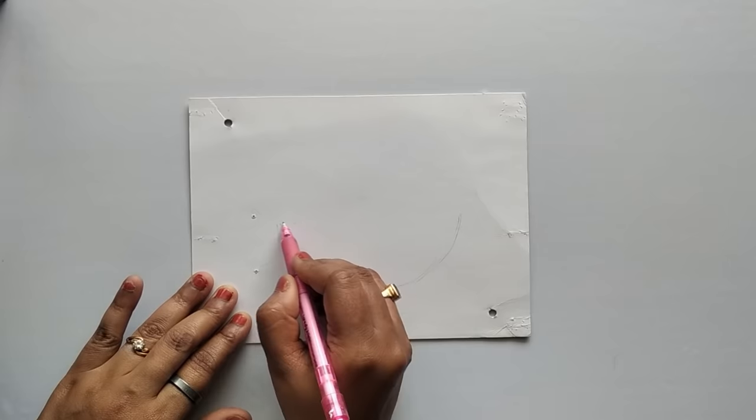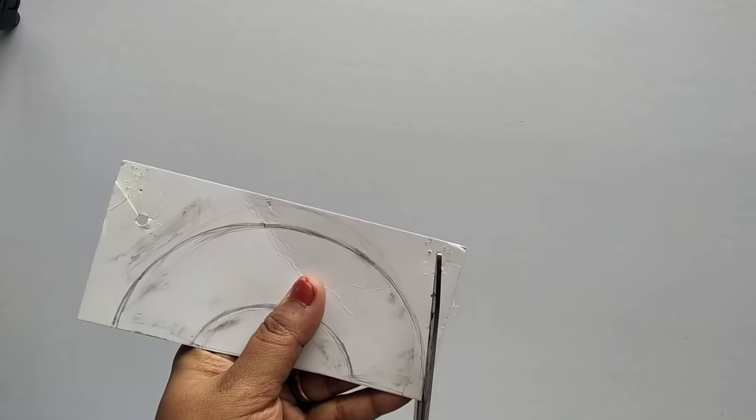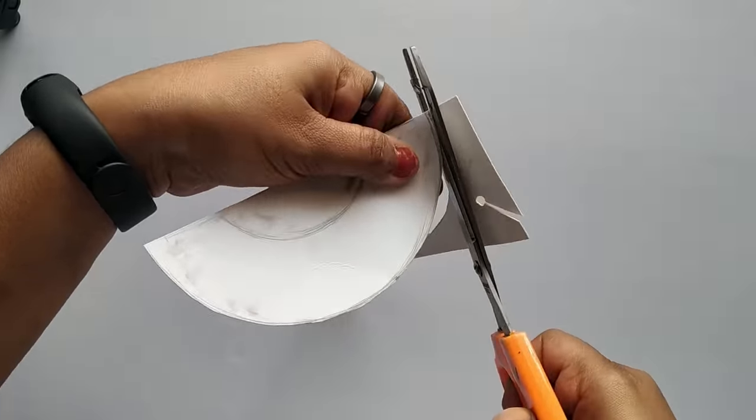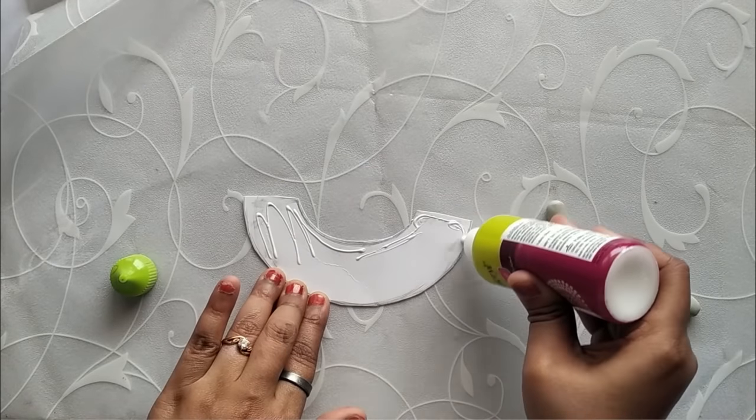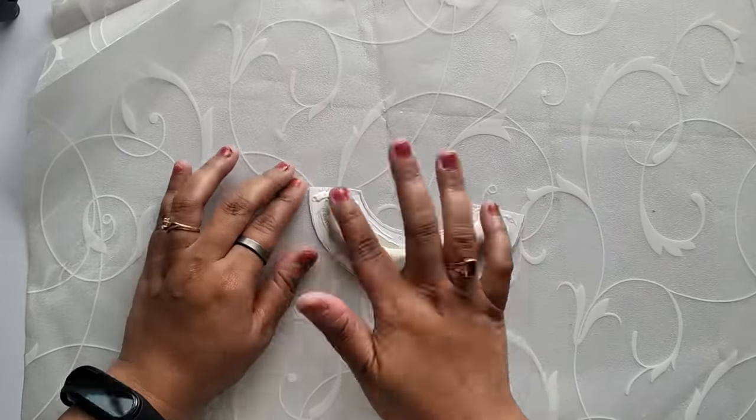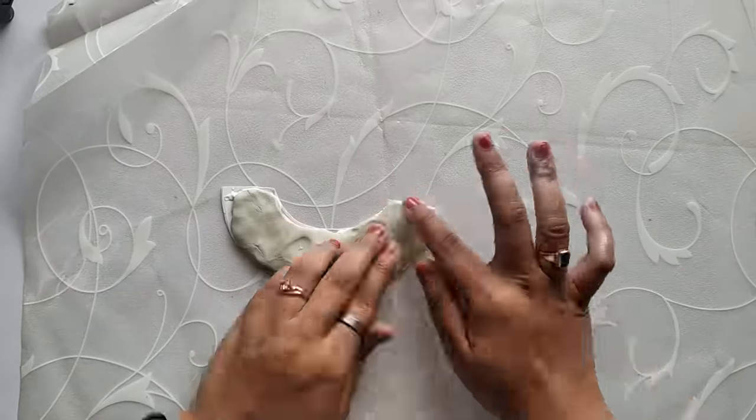Taking a piece of hard paper, drawing a half circle pattern on it, cutting the paper according to the pattern. Now rolling the clay to create a cylindrical shape, applying glue on the piece of paper and placing the clay following the pattern.